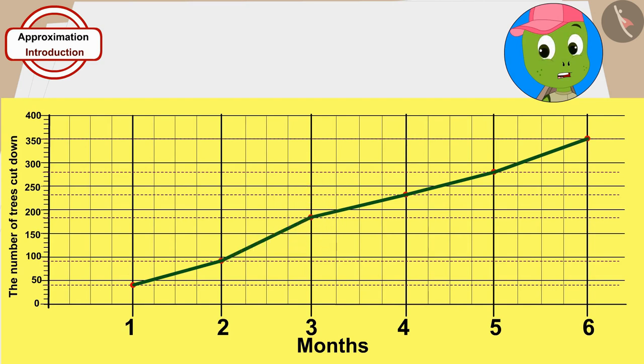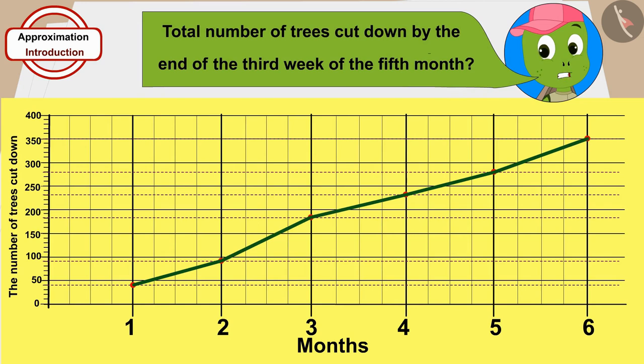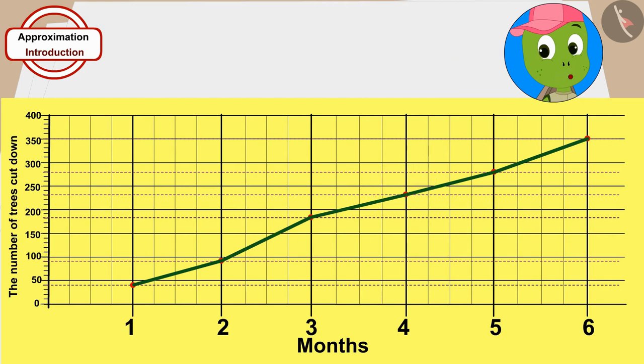Hmm! How do I estimate the total number of trees cut down by the end of the 3rd week of the 5th month? I will connect these points of the 4th and 5th months in a straight line. In this way,